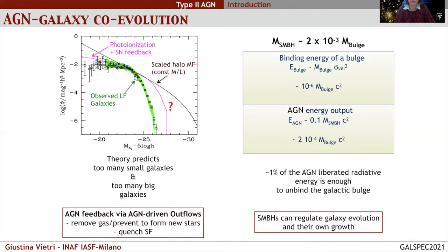Supernova feedback was invoked to reproduce the faint end of the luminosity function. For the bright end, the failure of supernova super winds in reproducing the slope required a different mechanism: AGN feedback. This feedback acts through outflows, which are capable of affecting the cold gas reservoir by removing gas or preventing it from forming new stars, leading to the regulation or quenching of star formation.